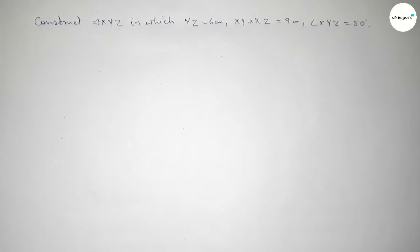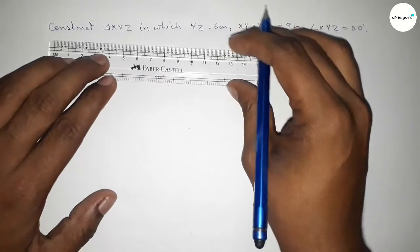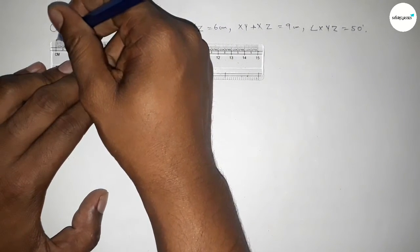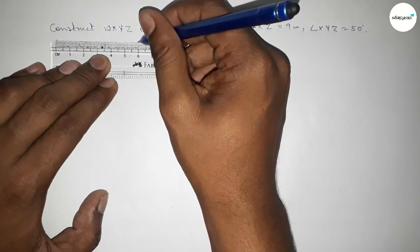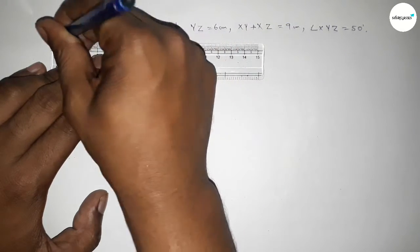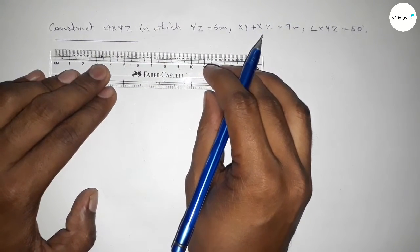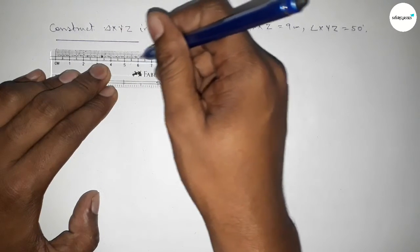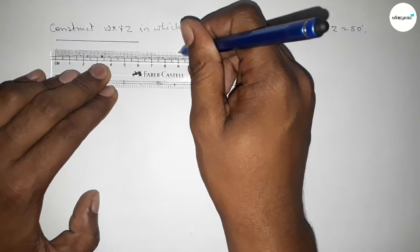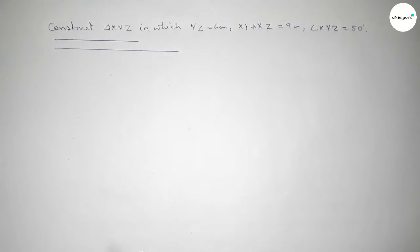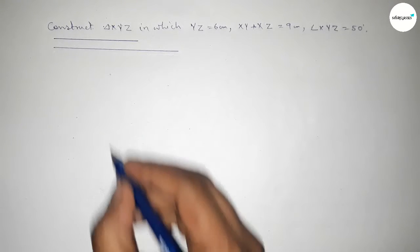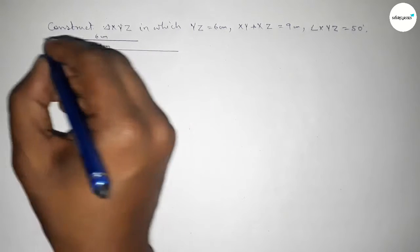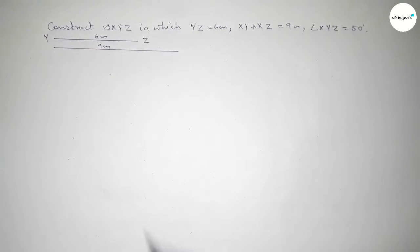So let's start the video. First of all we have to draw here the line YZ equal to 6 centimeter. This is 6 centimeter, and drawing another line of length 9 centimeter. So this side is 6 centimeter and this side is 9 centimeter, and this is YZ.